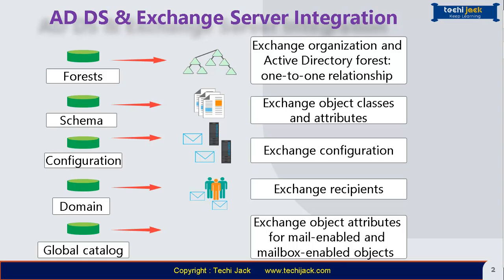Exchange Server transport services access the global catalog to find the location of a recipient's mailbox when delivering messages. Client access services also access the global catalog server to locate the user's mailbox server and to display the Global Address List to Outlook, Outlook on the Web, or Exchange ActiveSync clients. You must deploy at least one global catalog server in each Active Directory site containing an Exchange Server. Exchange Server does not use read-only domain controllers configured as global catalog servers, so you should not deploy Exchange Server in a site containing only RODCs configured as global catalog servers.